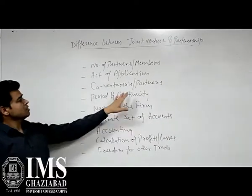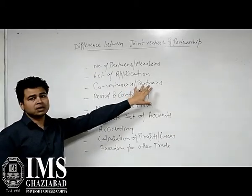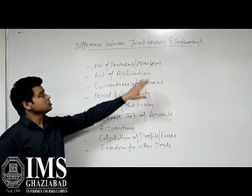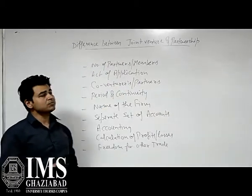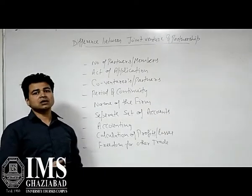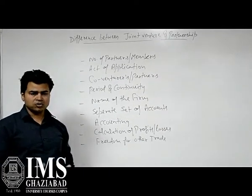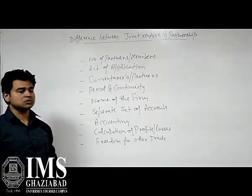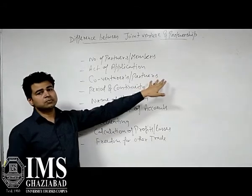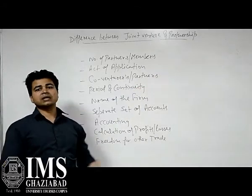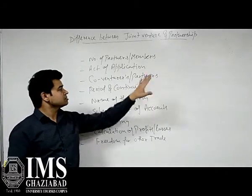Next is the basis of co-venturers or partners. In a joint venture, the persons carrying on the business are called co-venturers, or you can also say joint venturers. But in the case of partnership, the persons carrying on the business are individually called partners.